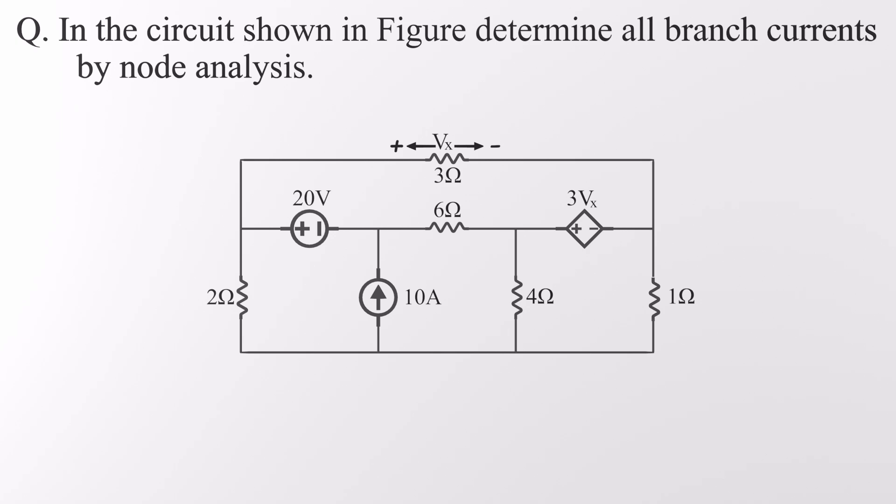In this circuit we're going to find all the branch currents using one of the most powerful tools in circuit analysis: nodal analysis. This circuit features two voltage sources and a current source. One of the voltage sources is independent and the other is dependent.